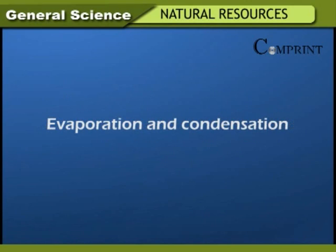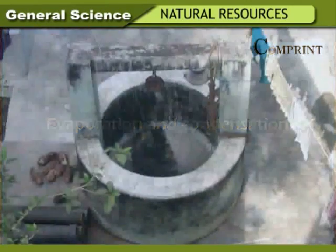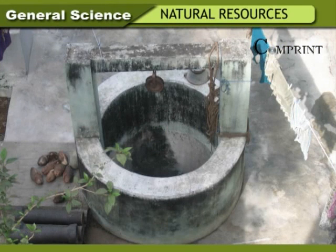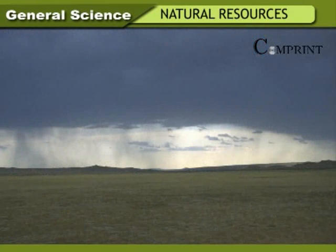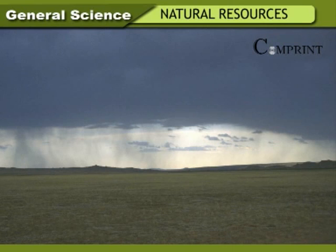Evaporation and condensation: Water sources like lakes, ponds, and wells are present in many places. In summer, the levels of these sources get reduced, and some of them get totally dried up. The water in seas, lakes, and rivers continuously enters the air — this is called moisture in air or humidity. The process in which water changes into vapor is called evaporation.